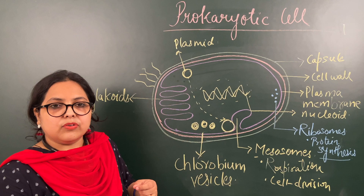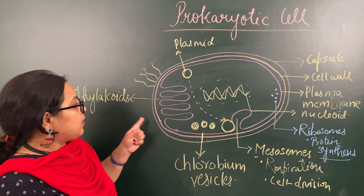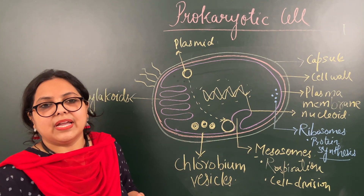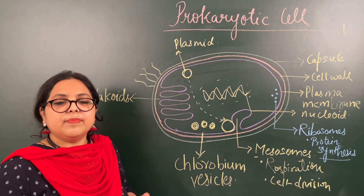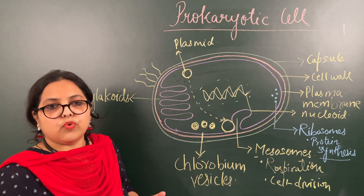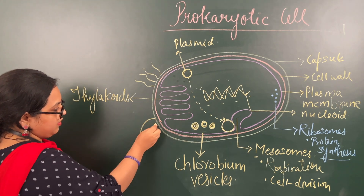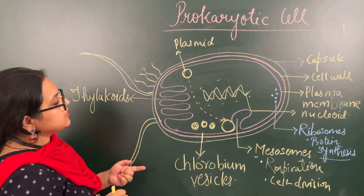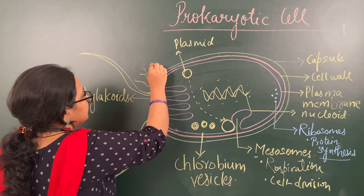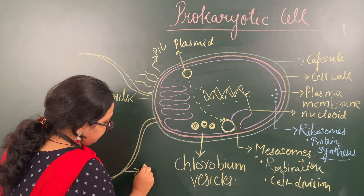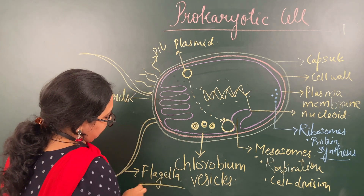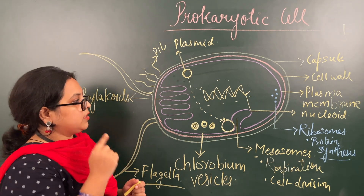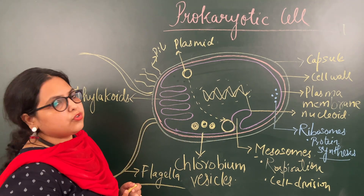The structure that actually helps in locomotion is the flagellum. If it is singular we call it flagellum, and if more than one are present we call them flagella. This flagellum has a wavy motion — like a wave in water — and it helps in locomotion, especially inside water. So this was the complete structure of a prokaryotic cell.